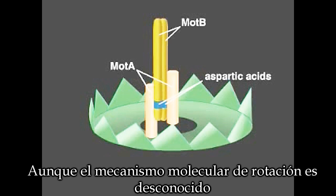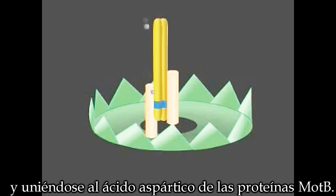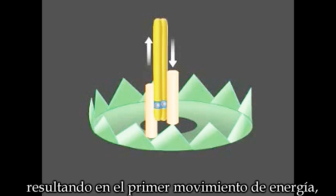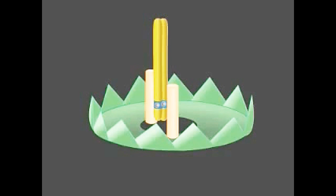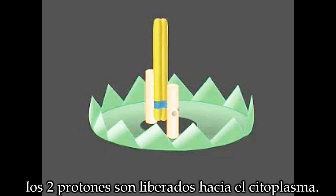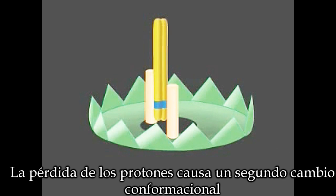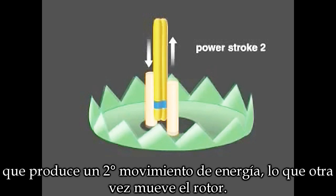Although the molecular mechanism of rotation is not known, one possible model describes protons moving through the channels in the stators and binding to the aspartic acid in the MotB proteins. This binding causes a conformational change in MotA proteins, resulting in the first power stroke that moves the rotor incrementally. At the end of the first power stroke, the two protons are released into the cytoplasm. The proton loss causes a second conformational change that drives the second power stroke, once again engaging the rotor.